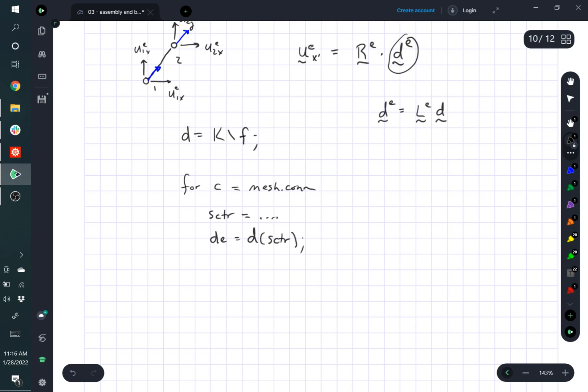But recalculate the scatter map, just as you did before. And then you can gather your element displacements. And so since scatter should be a 4 by 1 vector, then your DE is going to be a 4 by 1 vector as well.